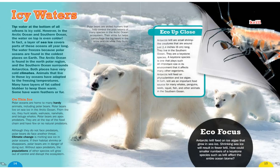Icy waters: the water at the bottom of all oceans is icy cold, but in the Arctic Ocean and Southern Ocean, the water on top is even colder. A layer of sea ice covers parts of these oceans all year long. The Arctic Ocean is found in the north polar region and the Southern Ocean surrounds Antarctica. Animals that live in these icy oceans have adapted to freezing temperatures — many have layers of fat called blubber to keep them warm, and some have warm feathers or fur.